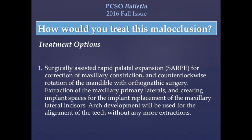Different approaches for this case will be possible, but for comparison, we can think of mainly two distinct treatment plans. The first option would be using SARP for the correction of maxillary constriction, and surgically correcting the mandible with counterclockwise rotation. In order to limit the surgery to the mandible, we should maintain the upper lip support by creating implant spaces for the maxillary lateral incisors after extracting the primary teeth. Arch development must be used for alignment of the teeth without any further extractions.